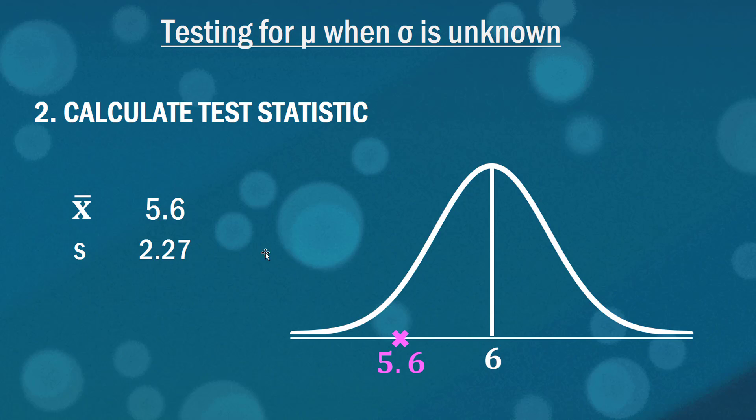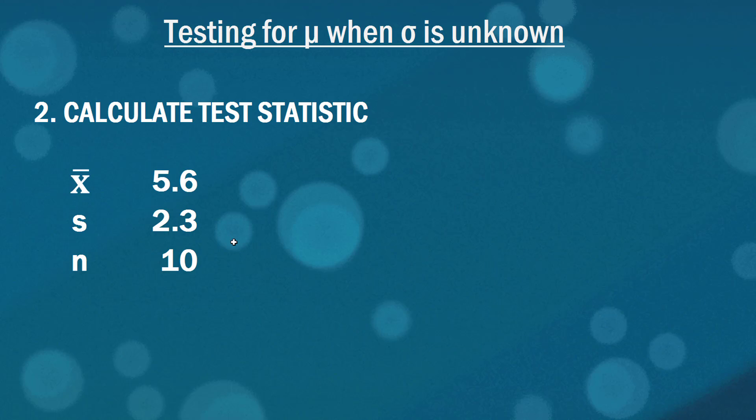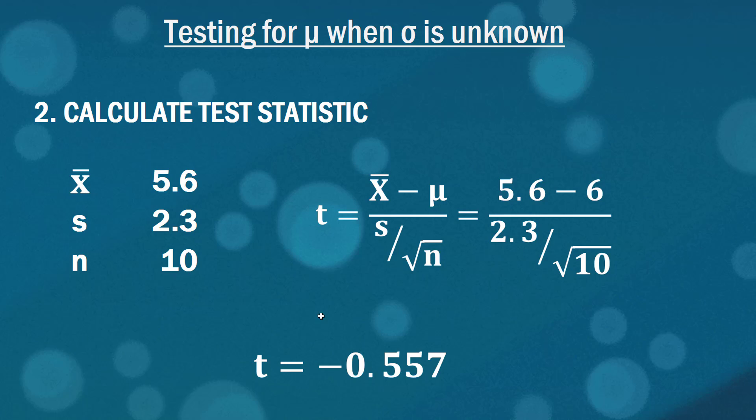We're going to actually have to calculate a test statistic here and using these pieces of information x̄, s, and we know there's also 10 observations, we can calculate a t statistic based on this formula here. The reason why it's a t statistic and not z is because we do not know what the population standard deviation is. When that's the case we have to use a t distribution and here we get a t statistic of minus 0.557.